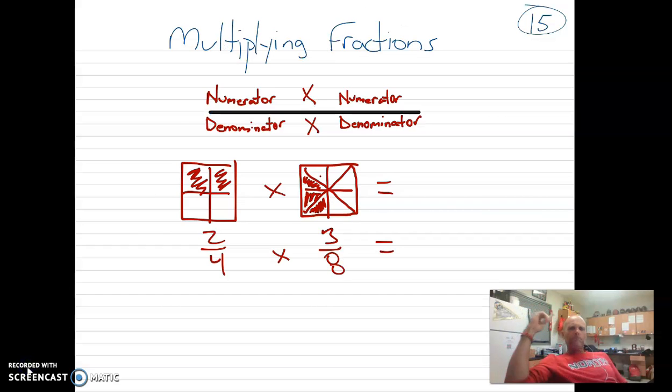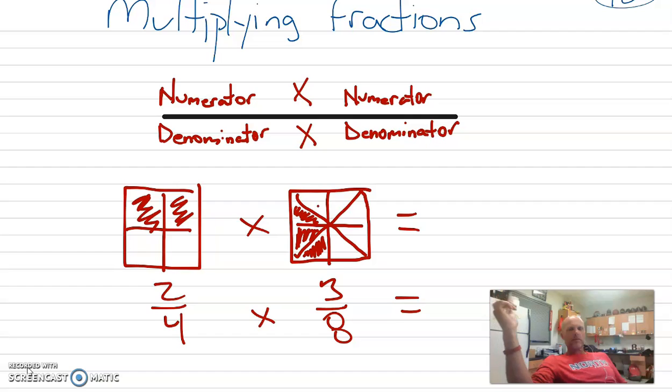Alright, I want you to go ahead and write this down right here. The top is a fraction, it's actually two fractions. Numerator times numerator, denominator times denominator, going straight across. Then I've got two models there, one is 2 fourths on the left, and the one on the right is 3 eighths. So go ahead and get that drawn, you can pause it now.